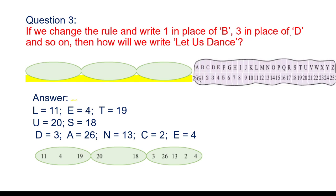Now, moving to the next page: if we change the rule and write 1 in place of B, 3 in place of D, and so on — then how will we write the letters in 'let us dance'? Look here — in this question the rule has changed. Our first letter is A, but here we write 1 in place of B, 2 in place of C, and continue the numbering in the same way.